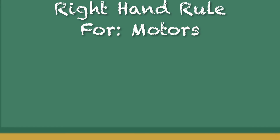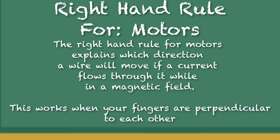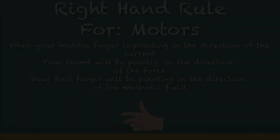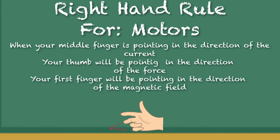Right-hand rule for motors: the right-hand rule for motors explains which direction a wire will move if a current flows through it while in a magnetic field. This works when your fingers are perpendicular to each other. When your middle finger is pointing in the direction of the current, your thumb will be pointing in the direction of the force, and your first finger will be pointing in the direction of the magnetic field.